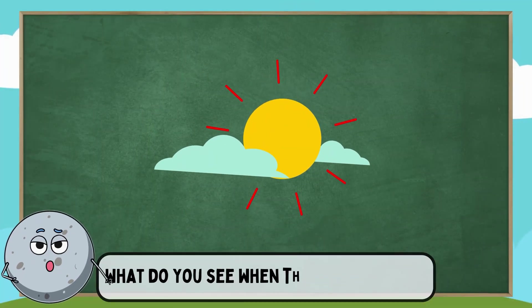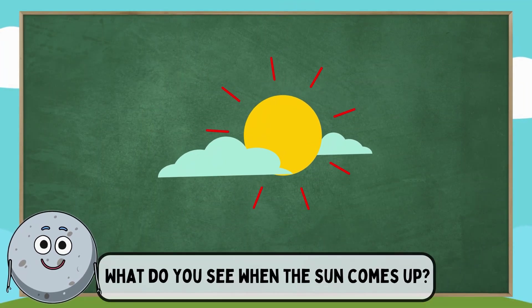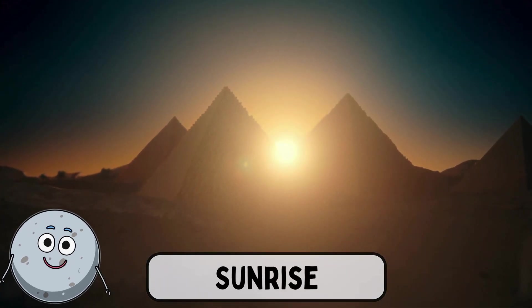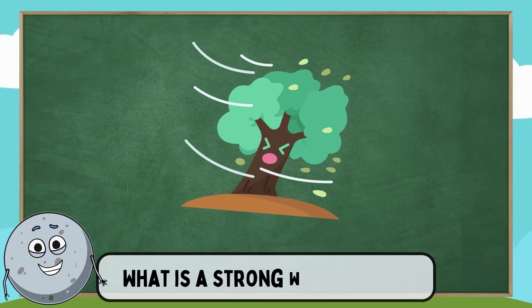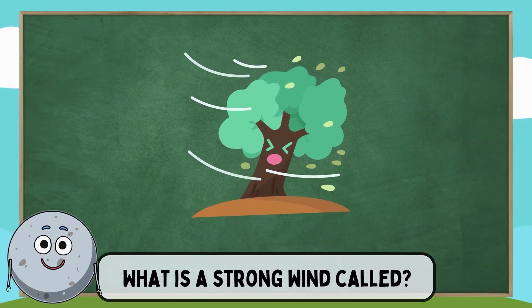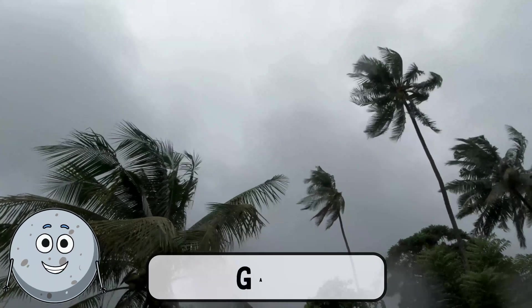What do you see when the sun comes up? I see a sunrise. What is a strong wind called? It's called a gale.